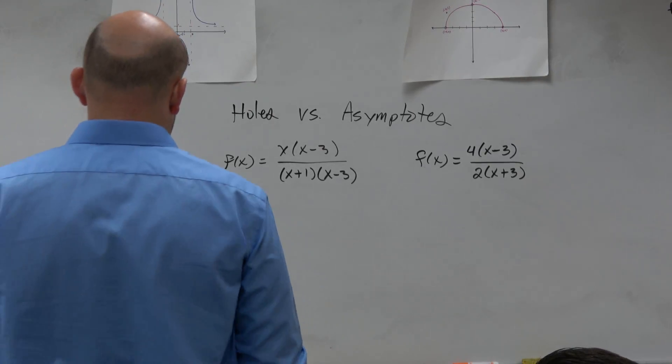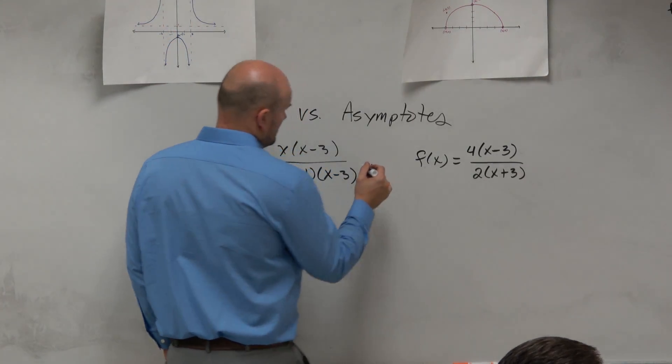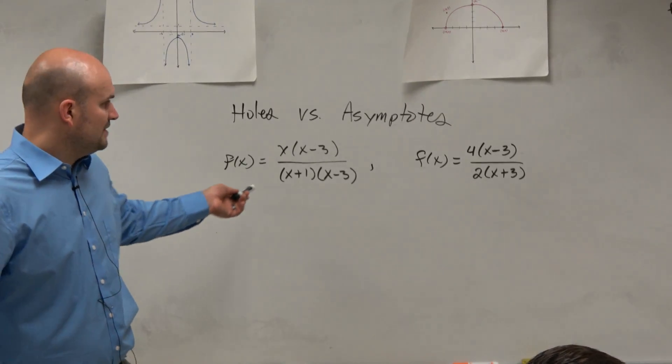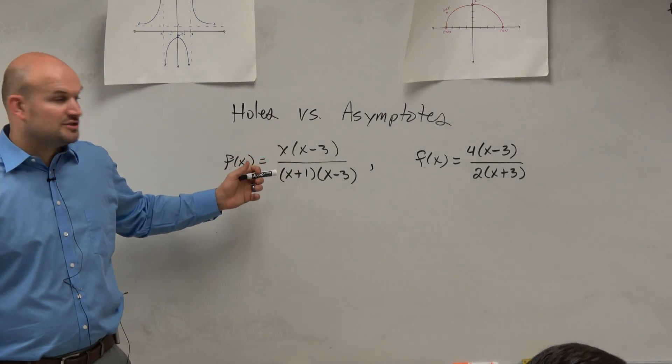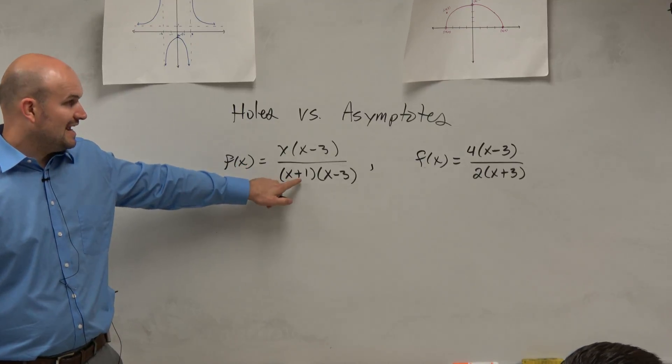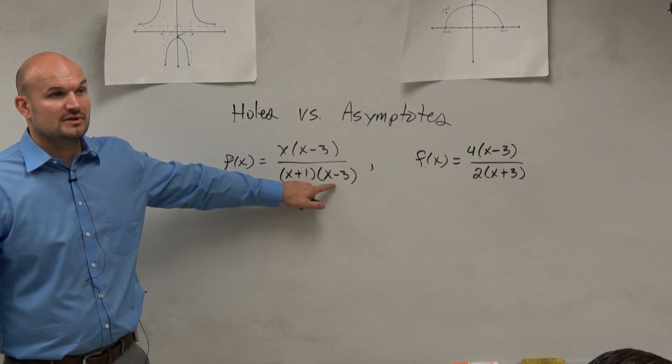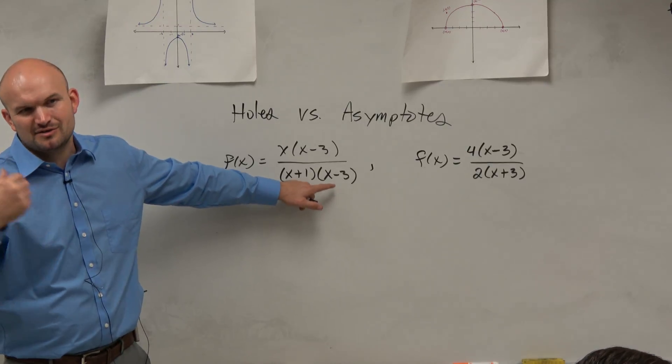So let's do these one at a time. One question I'll ask you is, we should hopefully be able to identify the domain here. We know that the domain is going to be all real numbers except for negative 1, because that makes that 0, and 3, because that makes that 0. Right? You guys kind of see how, like, inspection, we can kind of do this a little bit quicker.